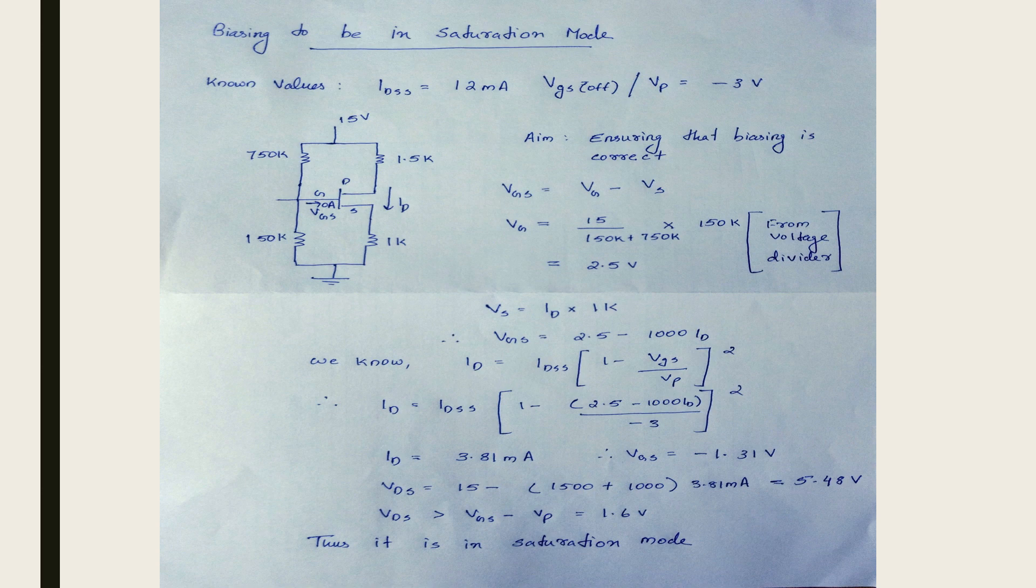Now we shall compare VDS and VGS minus VP. We get VGS minus VP is equal to 1.6 volt. Thus we know VDS is greater than VGS minus VP. Thus it is in saturation mode. Now this is the theoretical part. We can take the multimeter and check the voltages at each point while doing the experiments in lab. Thus ensuring that the biasing is correct before we start doing the experiment. Thank you.